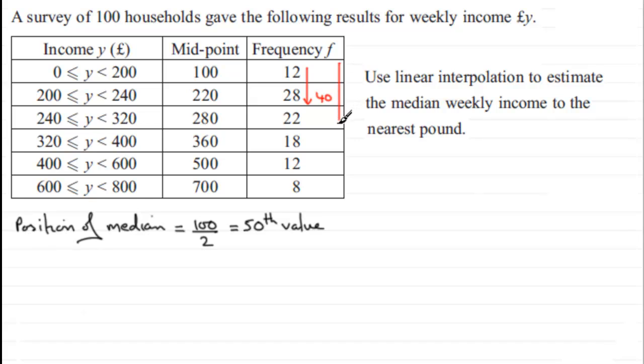But if we add 12, 28, and 22, we just work our way down this column. Once we get to the end here that's going to be a total of 62, so the 50th value is going to be in this interval here, this class interval from 240 to 320. So what I do is I draw that class interval.